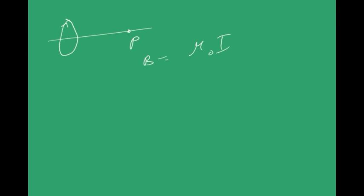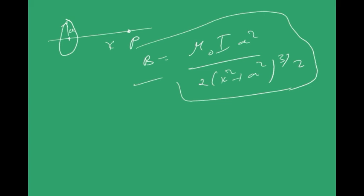Recall the formula for the magnetic field at a point P on the axis of a circular current-carrying loop: B = μ₀ I a² / [2(x² + a²)^(3/2)], where a is the radius of the circular loop and x is the distance from the center to point P.